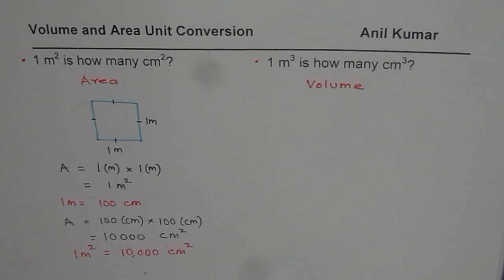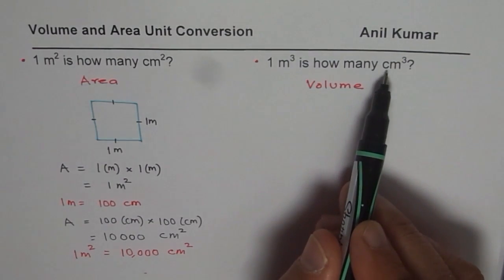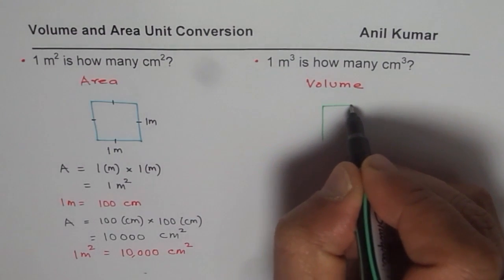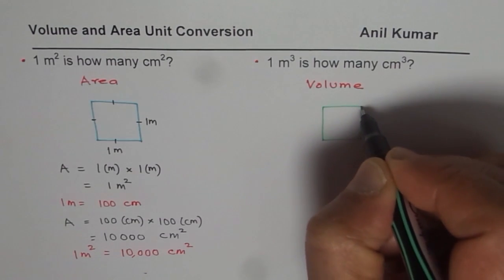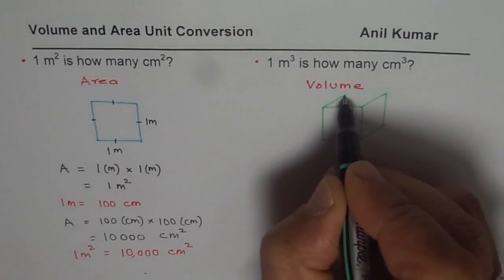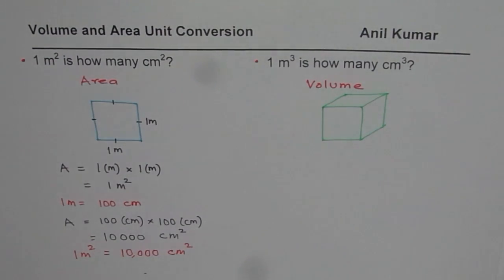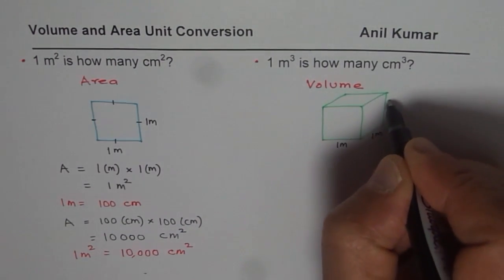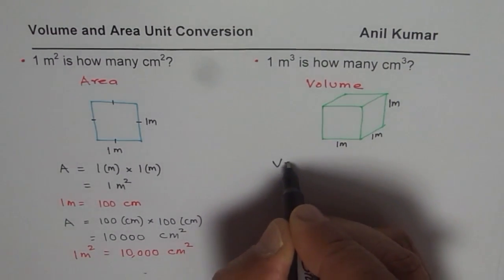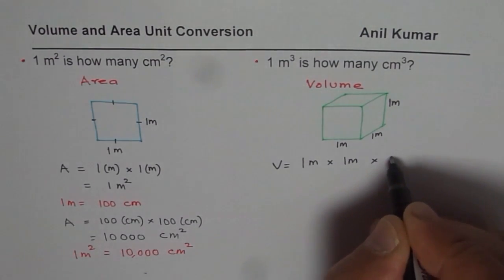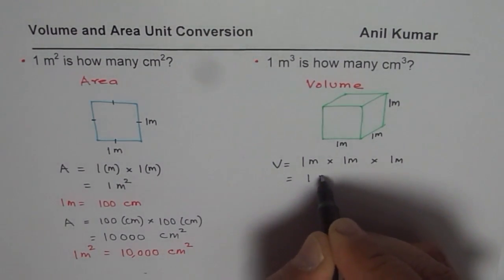Now you can follow the same strategy and figure out the relation between 1 meter cube and how many centimeter cubes. So in that case what are we going to take? We are going to take a cube. So let me draw a cube here. Draw a square and give it 3 dimensions. So that is our cube. And now let us say it is having a length of 1 meter, width of 1 meter and height of 1 meter.